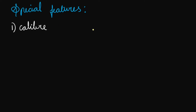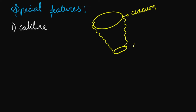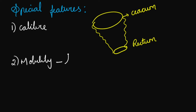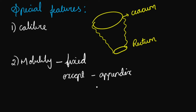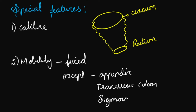The special features of the large intestine: first, regarding calibre — it starts very wide in the cecum, and once it reaches the rectum the calibre gets reduced and becomes narrowed. Second, regarding mobility — most of the large intestine is fixed, except three parts: appendix, transverse colon (which is the most mobile part at 50 cm), and sigmoid colon, which has no mesentery attachment and is mobile.